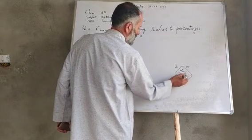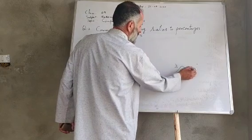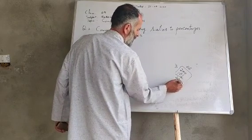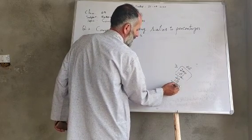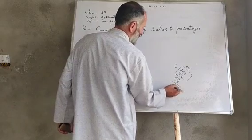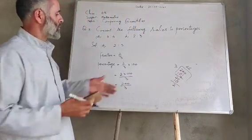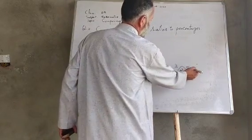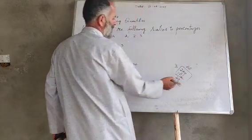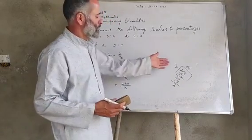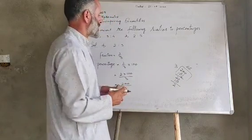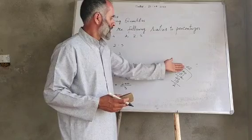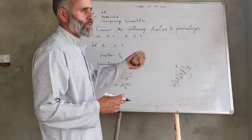The value comes to 66 with remainder 2. This equals 66 and 2/3, which we can express as a mixed fraction.